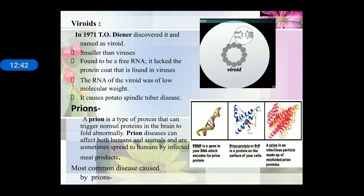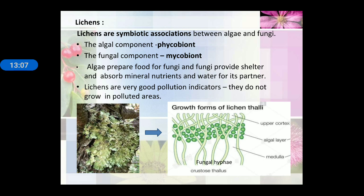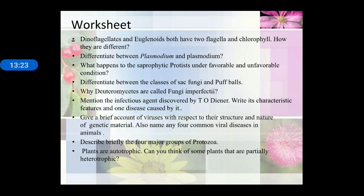Viroids are smaller than viruses; they have free RNA as genetic material and also lack a protein coat. Prions are a type of protein that can trigger normal proteins in the brain to fold abnormally; prion diseases can affect both humans and animals. Lichen is the symbiotic association between algae and fungi. The algal component is known as phycobiont and the fungal component is known as mycobiont. Algae prepare food for fungi and fungi provide shelter — they mutually benefit each other.